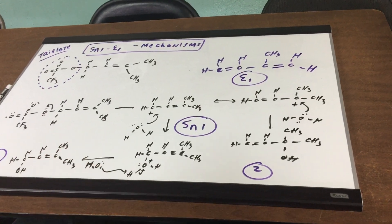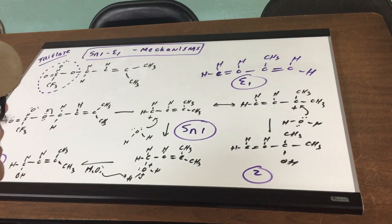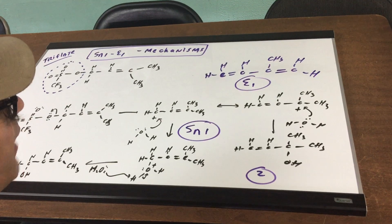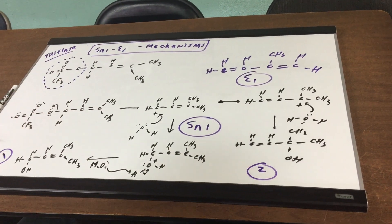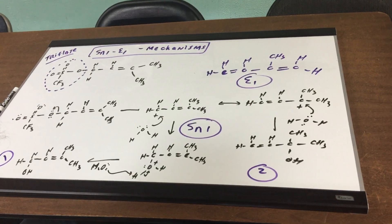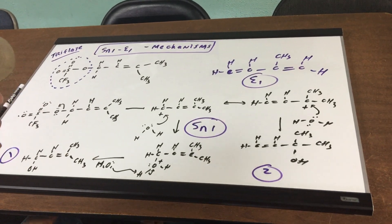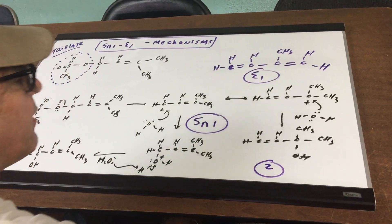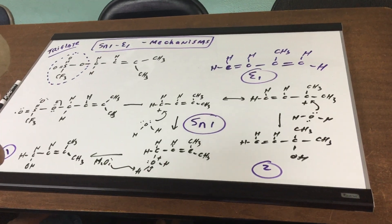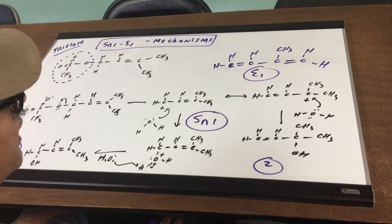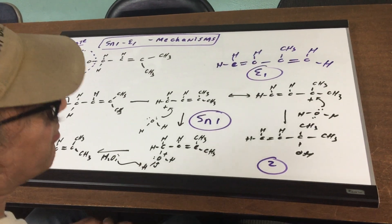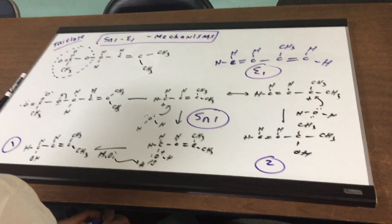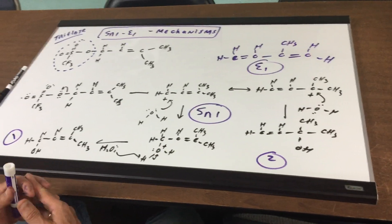So, if the question asked what kind of mechanism is operating, it would be the SN1 and the E1. And we've got an excellent leaving group here called Triflate, which was resonance-stabilized. I hope this gives you a clear understanding of these two competing mechanisms. If you want to get more E1, usually we put a little heat under it, and that would favor the E1 over an SN1. All right, good day to you. I'll see you in study group. Bye-bye.